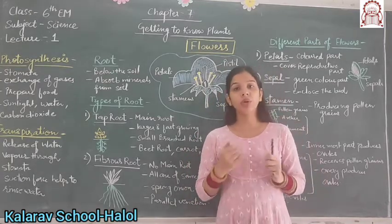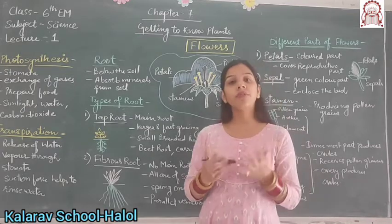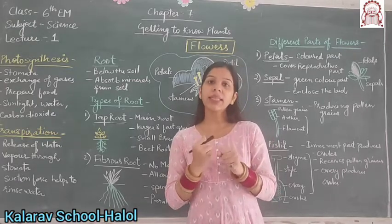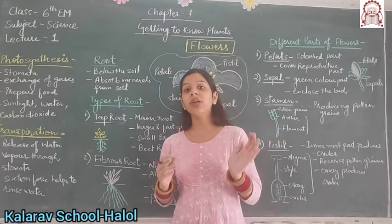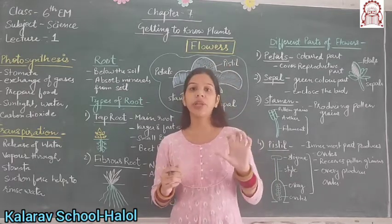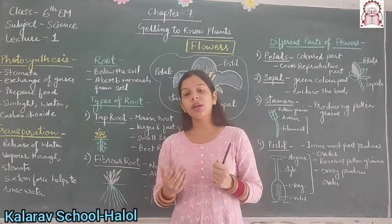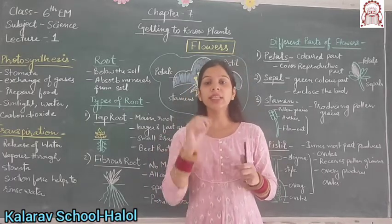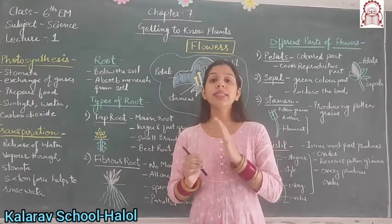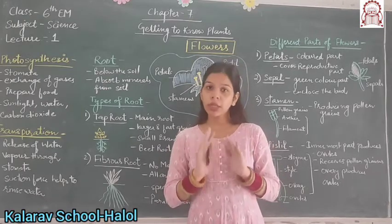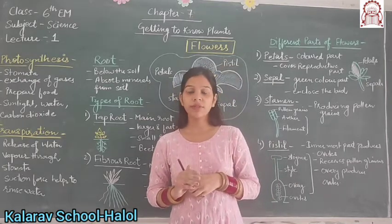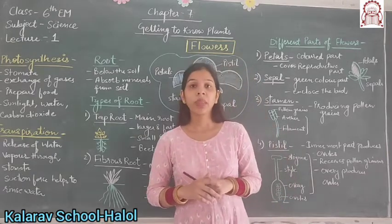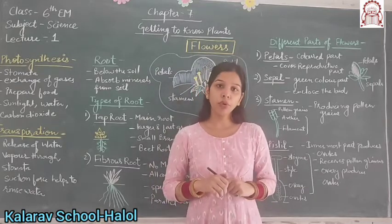You can easily understand this phenomenon at your home. From any green plant, cover the leaves with a polythene bag and tie them. Be careful that the leaves do not detach from the stem. Place this plant for 2-3 hours in the sun. After 2-3 hours, you can see small droplets of water on the inner side of the polythene bag as well as on the surface of leaves. In this way, we can say that transpiration is the release of water. You can do activity number 4 at your home.